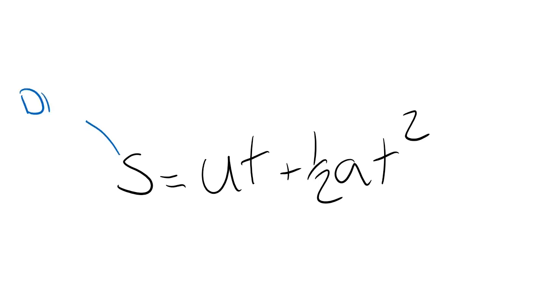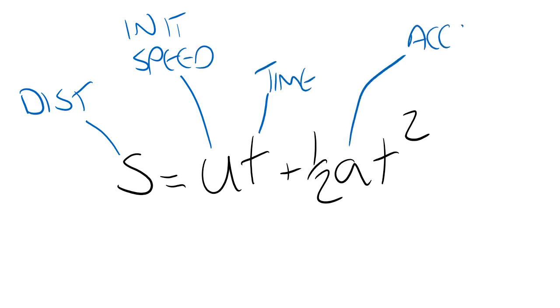So in the equation, s is the distance traveled, u is the initial speed, t is the time, a is the rate of acceleration, and this final t is also the total time, but this time squared.